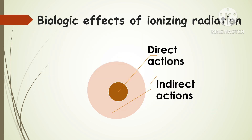Ionizing radiations like X-rays and gamma rays have two mechanisms by which they ultimately affect the cells. These two mechanisms are commonly called direct and indirect effects.